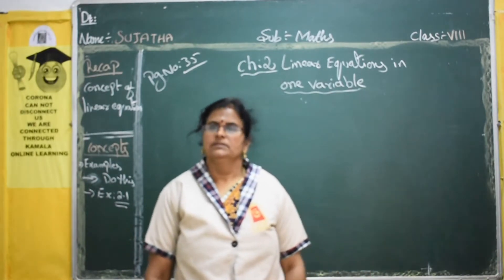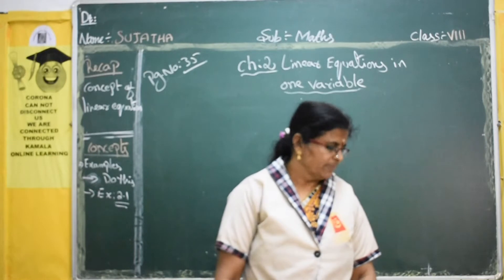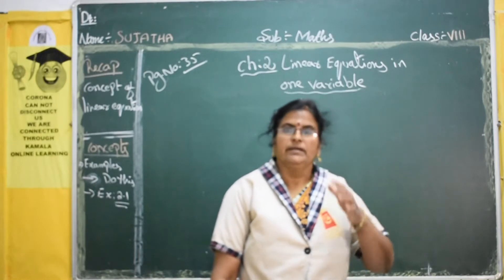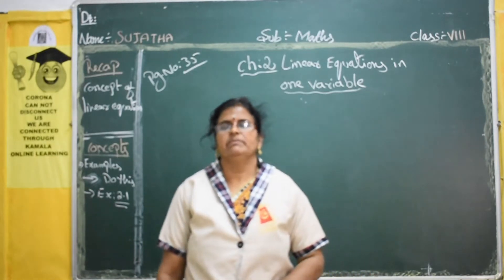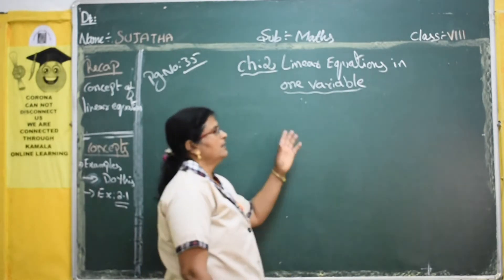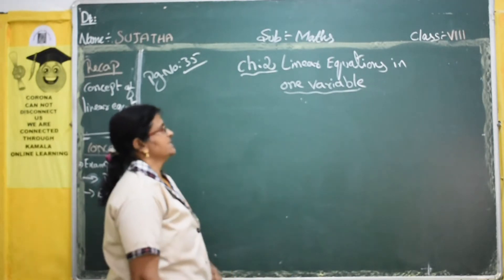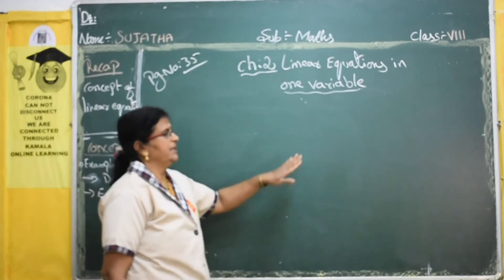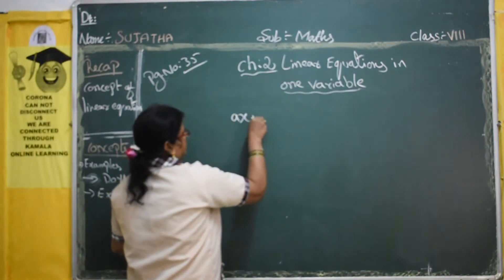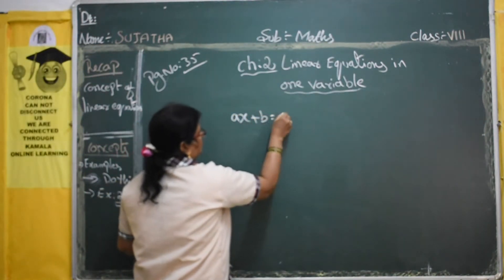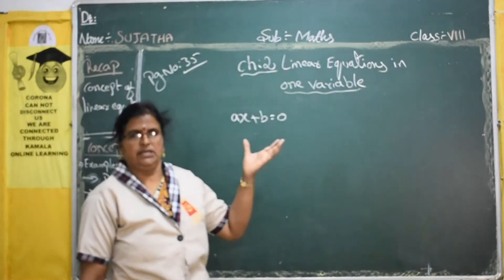We already completed chapter 1 in the previous session. Now, the introduction I have given is about linear equations. What is a linear equation? If the power of the variable is 1, it is a linear equation. The general form of a linear equation is ax plus b equals 0.